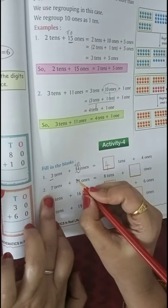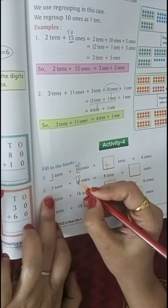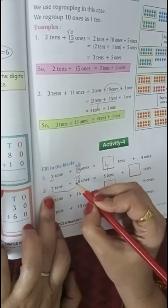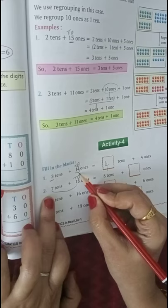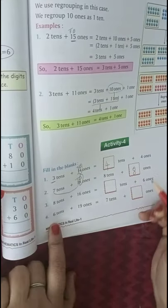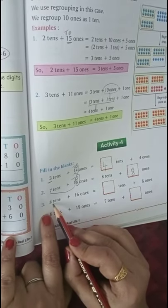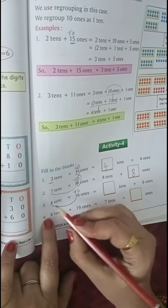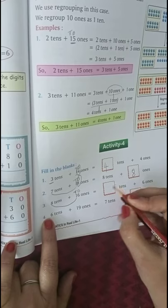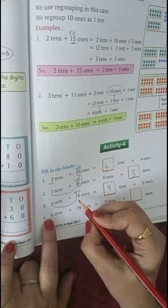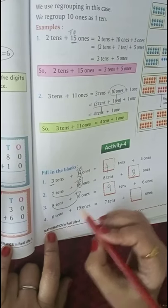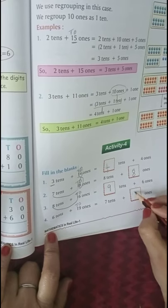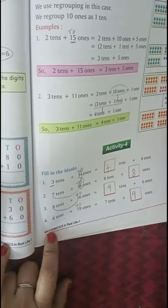7 tens plus 18 ones. This 1 ten will be added with the 7 tens, so 7 plus 1 is 8 tens and 8 ones are there. 8 tens plus 16 ones, again 1 ten. 8 plus 1 tens equals 9 and 6 ones are left. And 19 again, 1 plus 6 is 7 and 9 ones. Clear children? Any doubt?